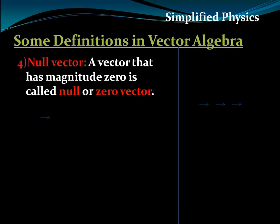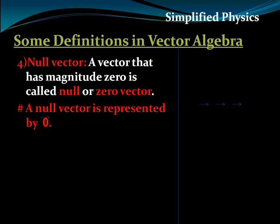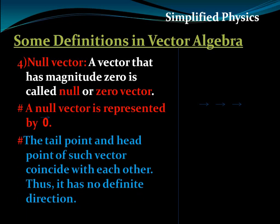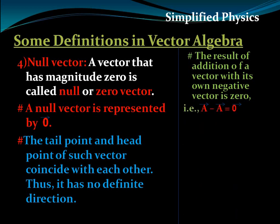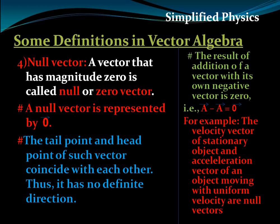Null vector: from the name it is clear — a null vector has zero magnitude, so it is also called a zero vector. It is represented by zero with an arrow. The tail point and head point of a null vector coincide, so it has no specific direction. A simple result: the addition of a vector with its negative gives a null vector. Examples include the velocity vector of a stationary object and the acceleration vector of an object moving with uniform velocity.